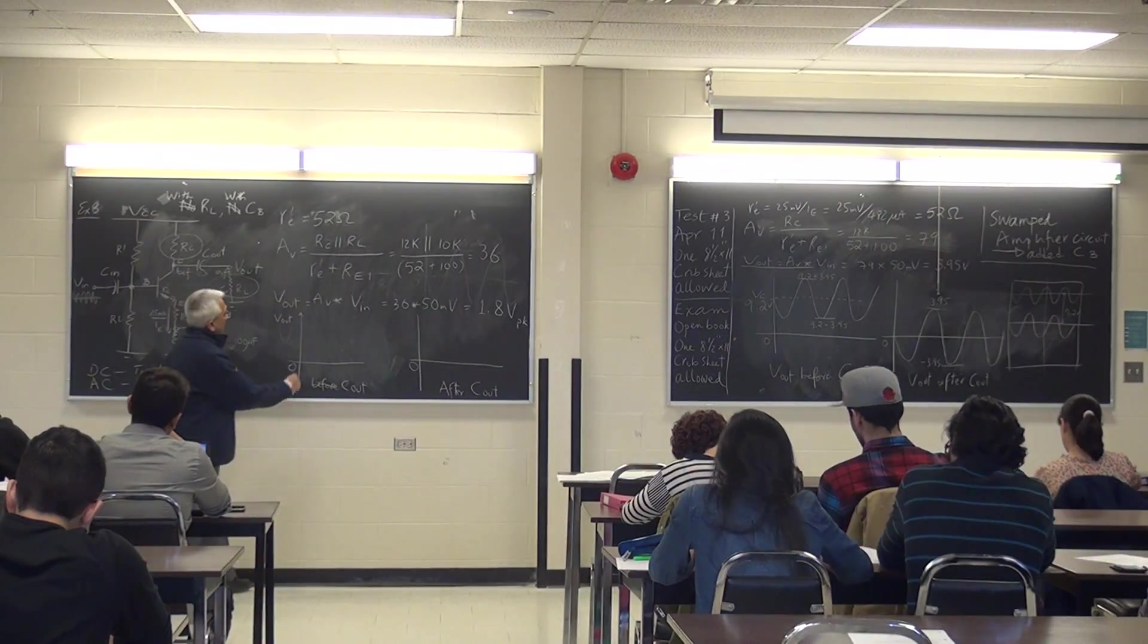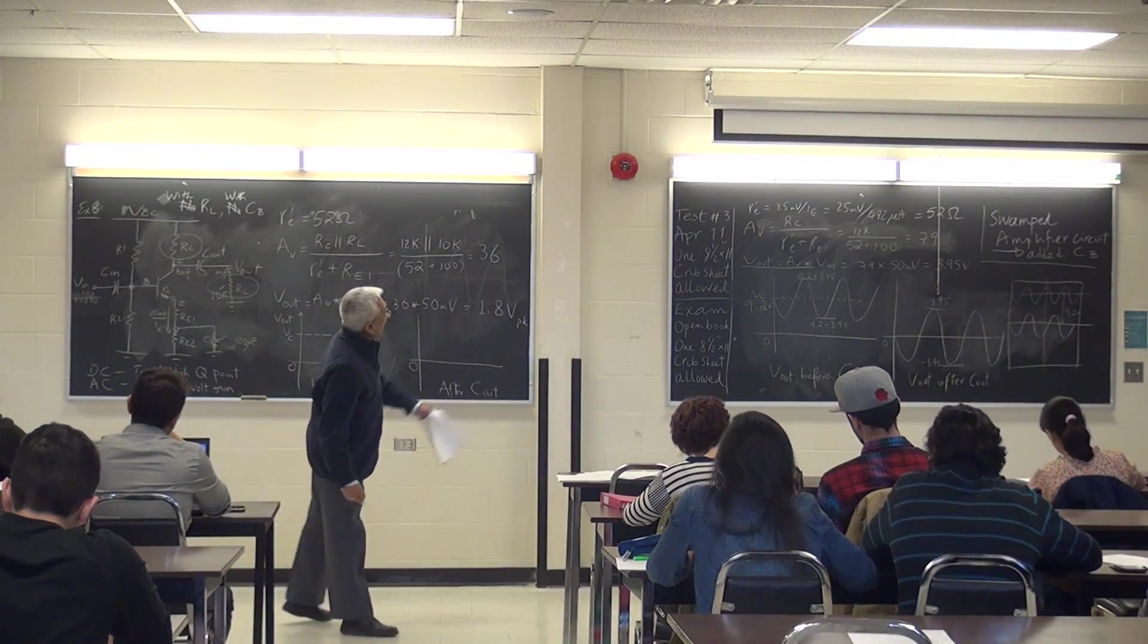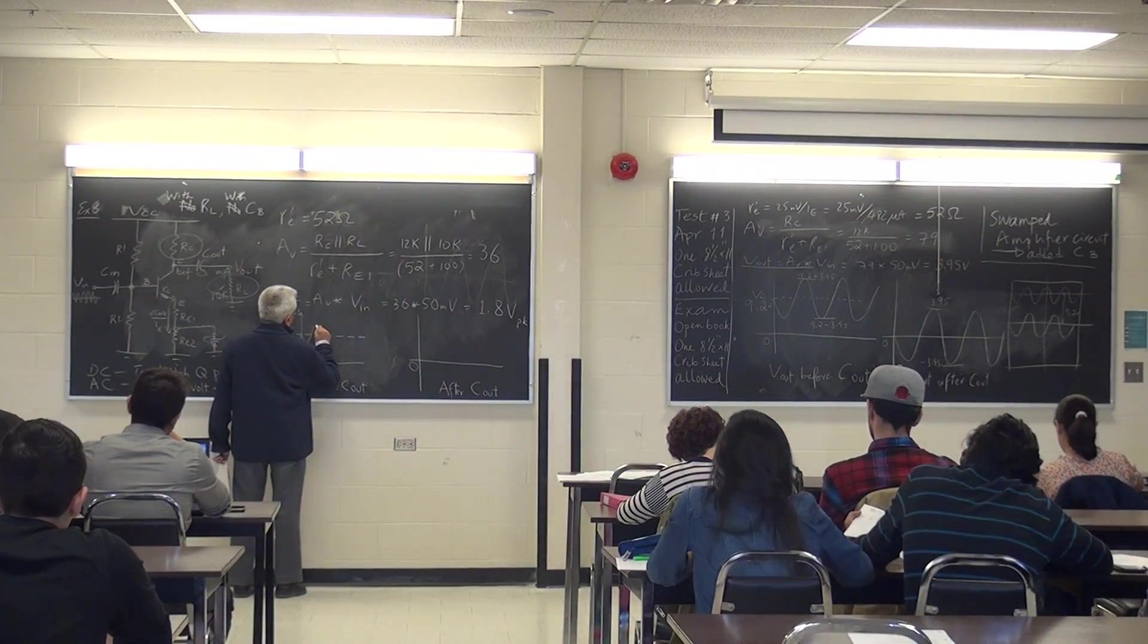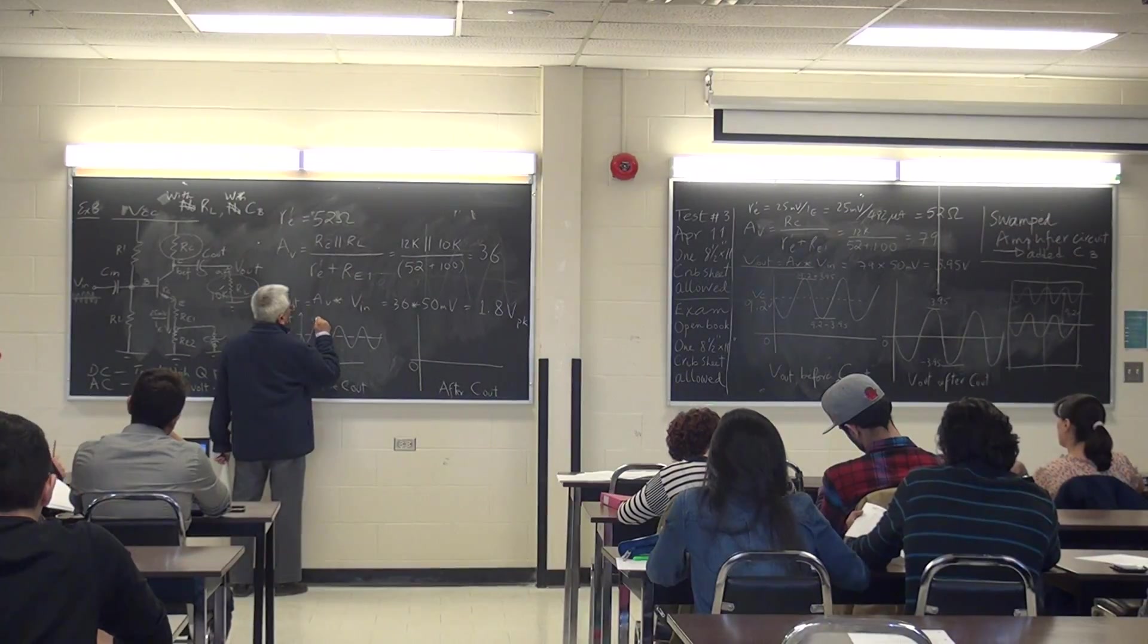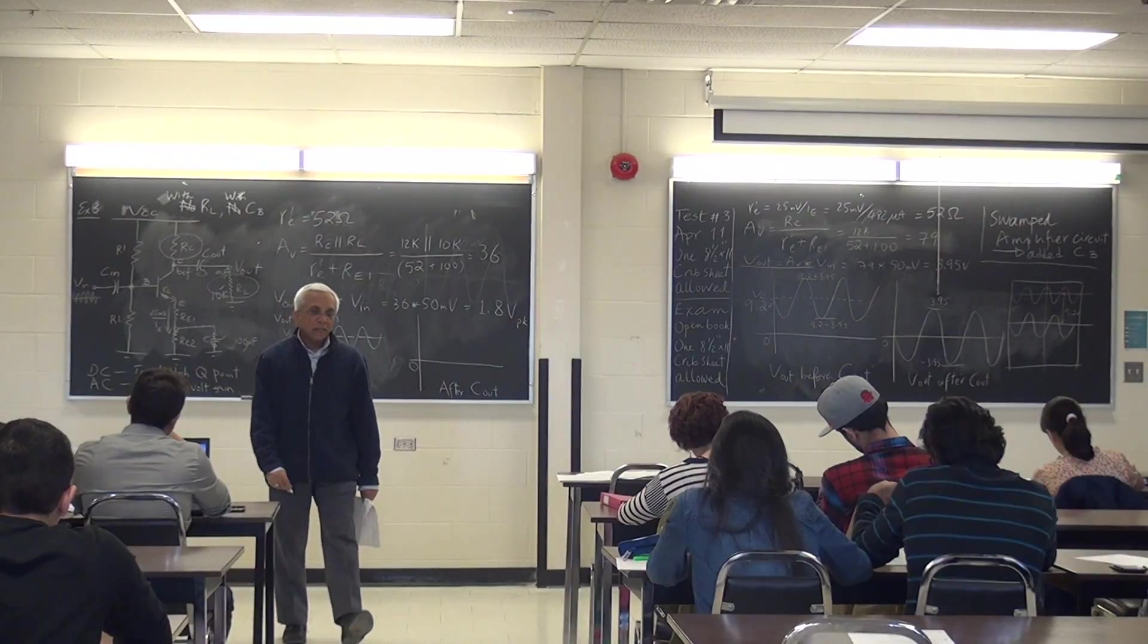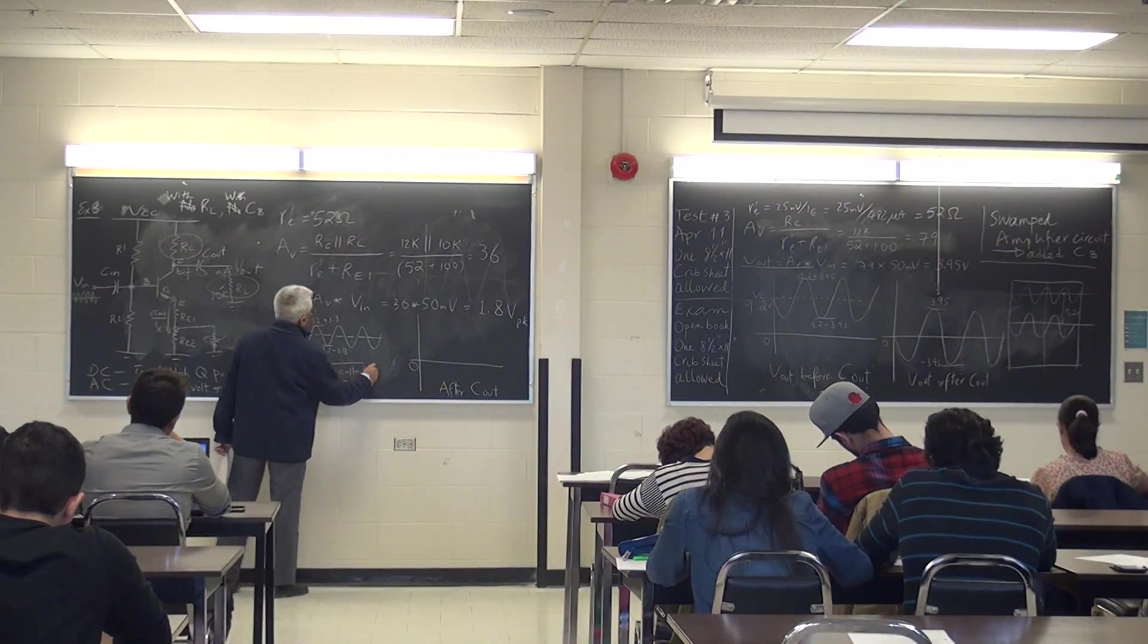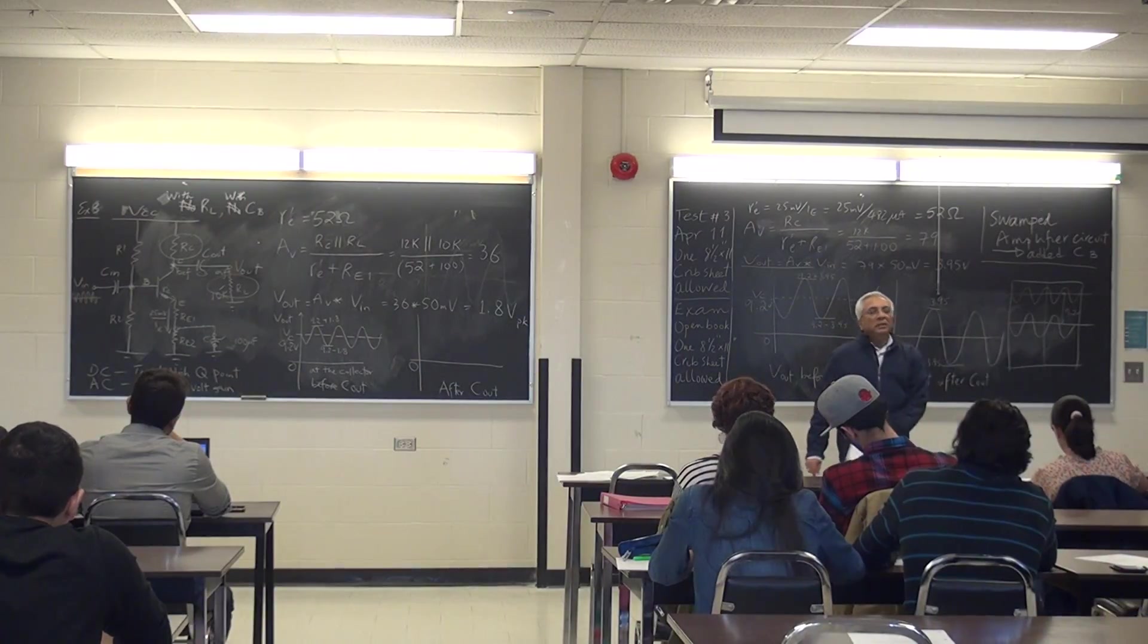The first thing I show is VC, which is the same VC I used there, which is 9.2 volts. But this time the signal is 1.8 volts, so I'll show it a little smaller. And so it's 9.2 plus 1.8, 9.2 minus 1.8. Do you see that? And that's at the collector. This is at the collector, right here. If I measure the voltage there on a scope, that's what I would see. I would see something like this. It would be with the DC offset.